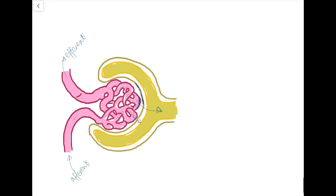Even though blood contains RBCs and plasma proteins, only a small amount — salts, amino acids, glucose, vitamins, nitrogenous waste, and small molecules — will enter the Bowman's capsule. Large molecules like platelets and RBCs will not pass through. The composition of the glomerular filtrate is similar to plasma except there are no blood cells, platelets, or plasma proteins.